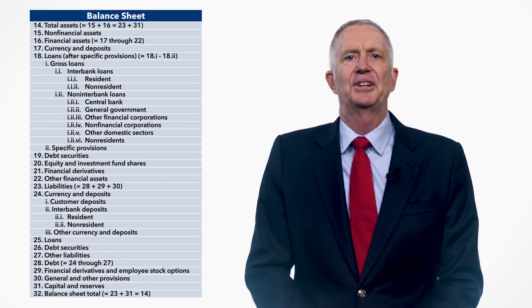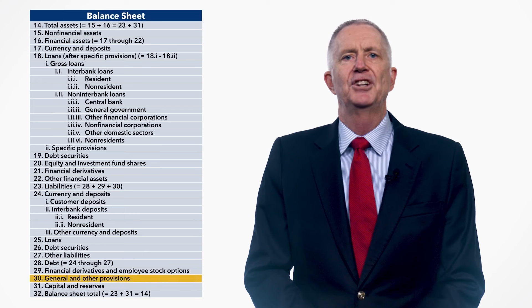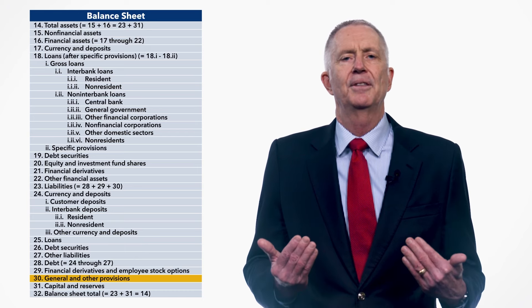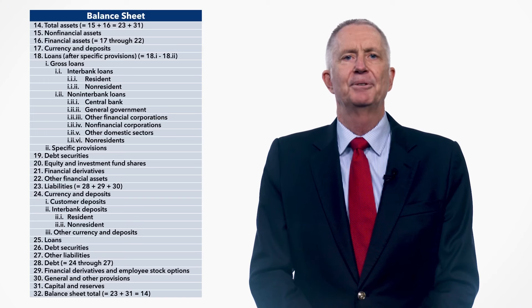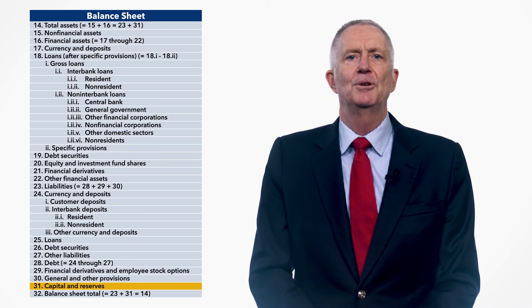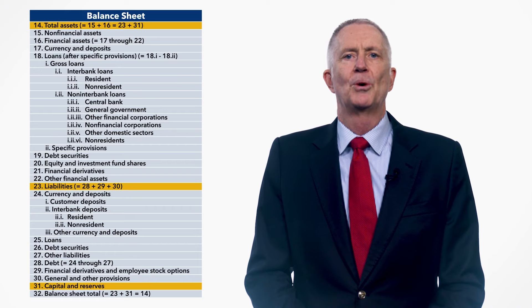All financial assets and liabilities not elsewhere specified should be included in line 22, financial assets, and line 27, liabilities. The 2019 FSI's guide defers to national supervisory standards for the allocation of IFRS 9 allowance for expected credit loss, or ECL, to general and specific provisions. General and other provisions, line 30, should be presented as liability items even though they are internal accounts reflecting potential future losses rather than obligations to creditors. Specific provisions reduce the net value of the asset on the balance sheet. Capital and reserves, line 31, is the equity interest of the owners in the enterprise and comprises the difference between the value of total assets, line 14, and total liabilities, line 23. It represents amounts available to absorb unexpected losses.